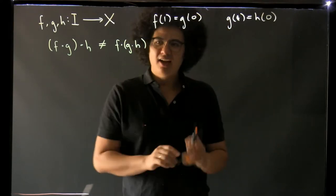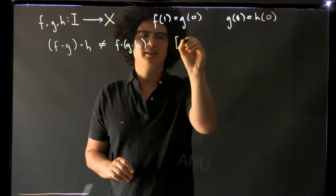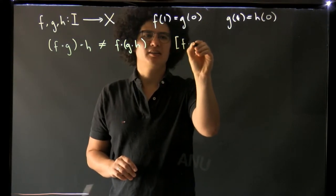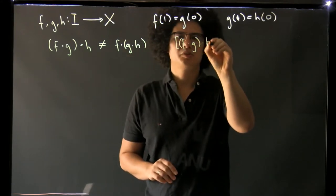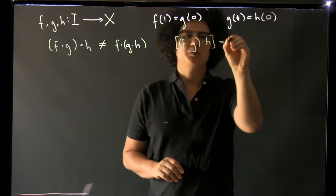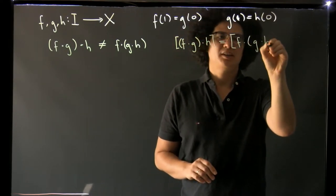However they are when we pass the homotopy. So my claim is that the homotopy class f composed of g composed with h is equal to the homotopy class of f composed with g composed with h.